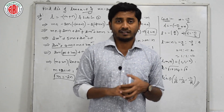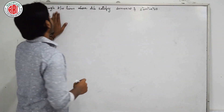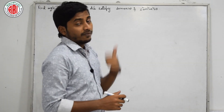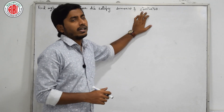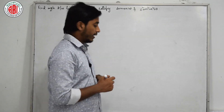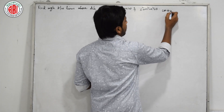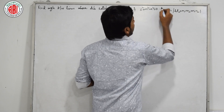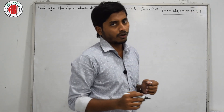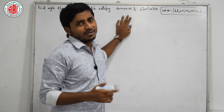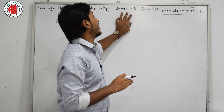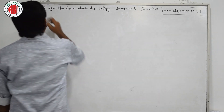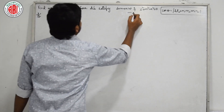Let us move on to the next question of a similar kind. Here the question asks us to find the angle between the lines whose DCs satisfy two given equations. First we have to find the DCs, then use the formula for angle between two lines: cos theta equals L1L2 plus M1M2 plus N1N2. This is equation 1 and this is equation 2.